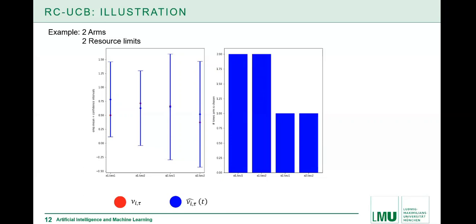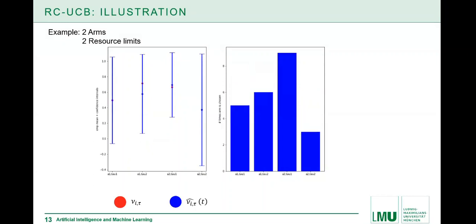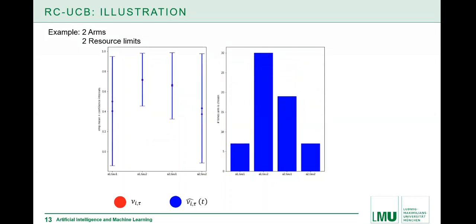After six rounds, the picture might be like this, so the estimates are close but not very close to the actual values they should estimate, but the confidence bounds are such that the true values are covered. When we run the algorithm, it will, depending on the upper confidence bounds, choose from time to time one suboptimal action. But in most cases, as we see here, the optimal action arm A1 and resource limit tau2 will be the one which is most often used.